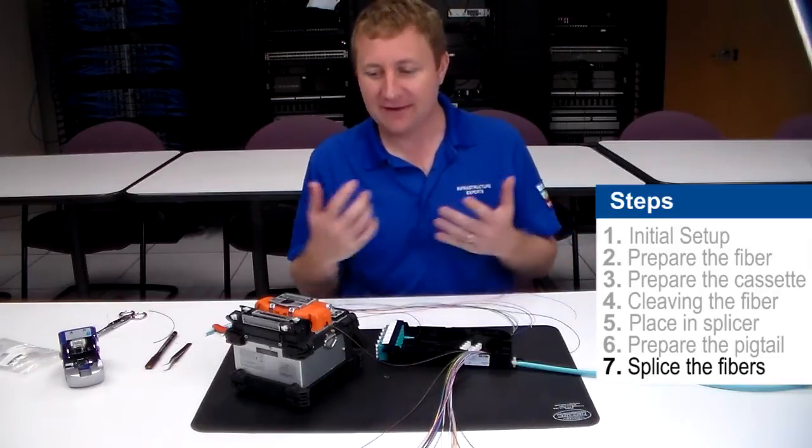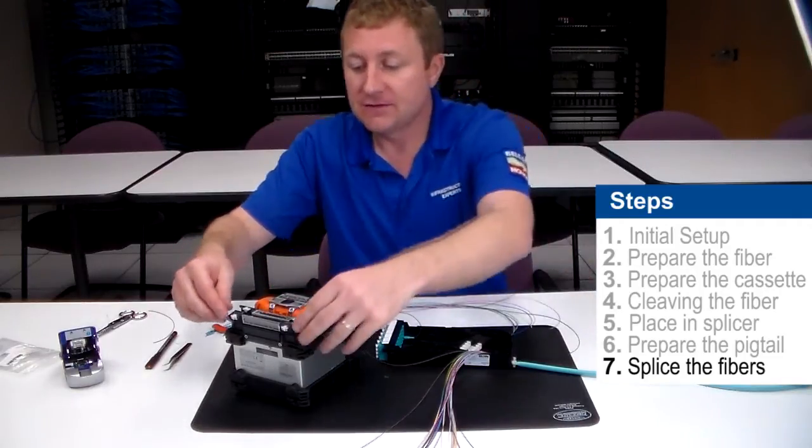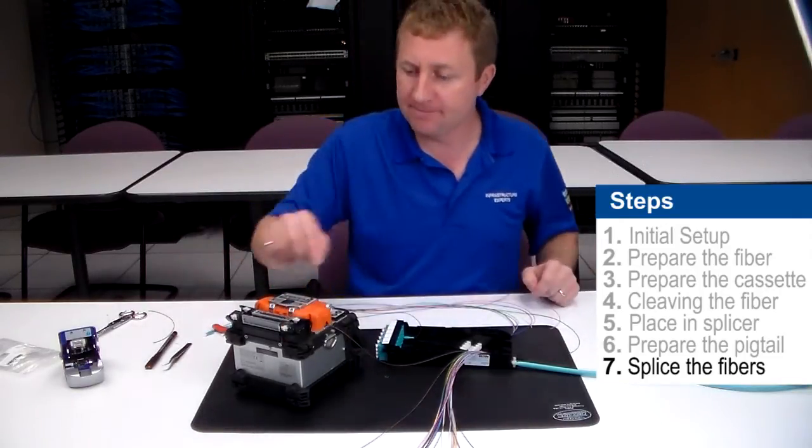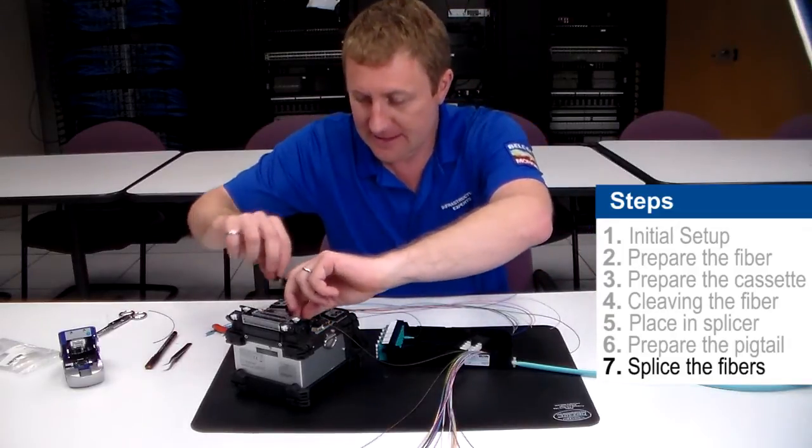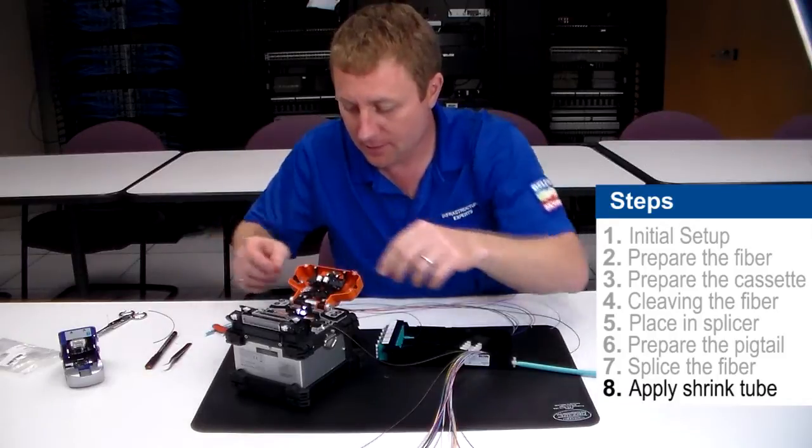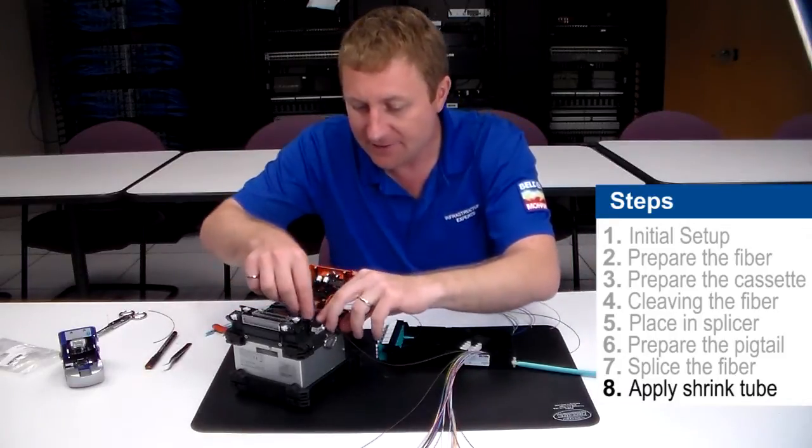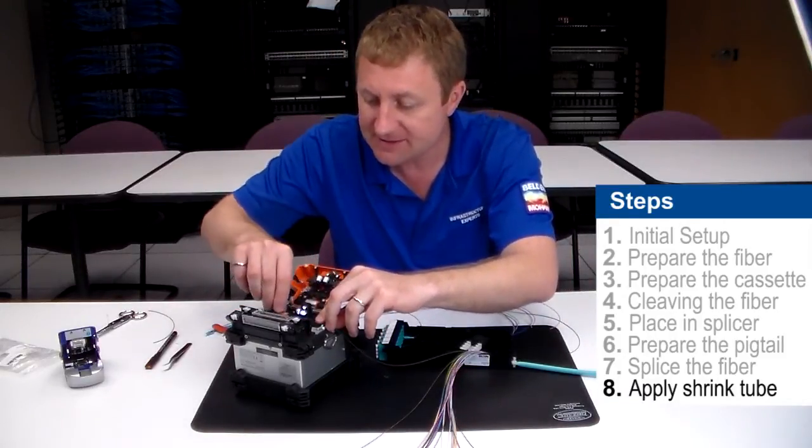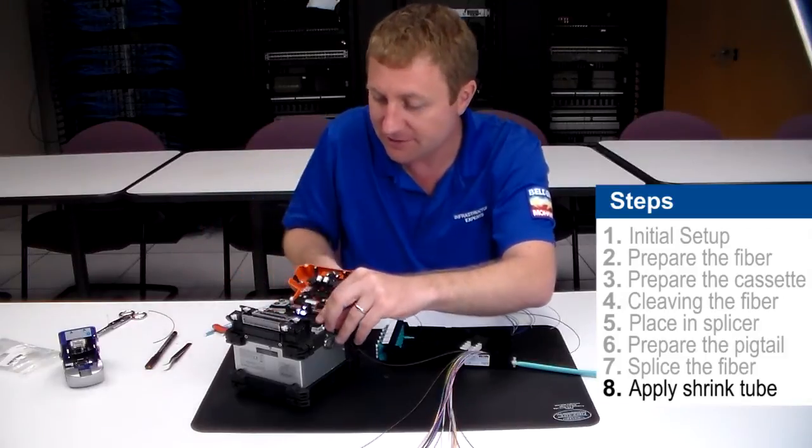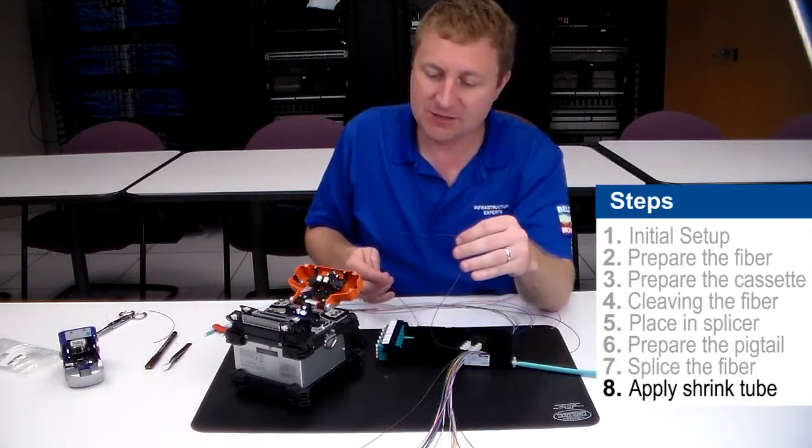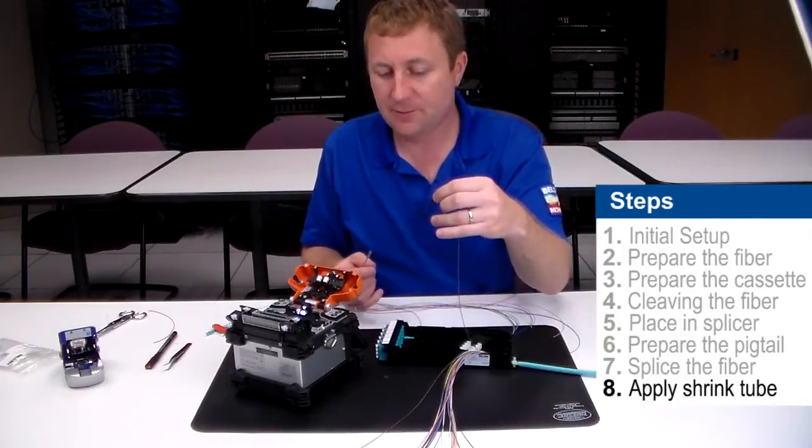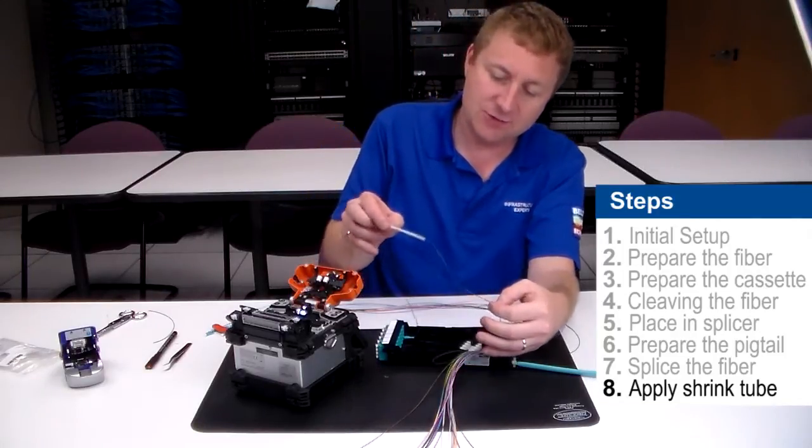So we got a great sound there. We have a very good splice. So first thing I'm going to do, I'm going to open my oven to be able to put my shrink tube on. I'm going to open my splicer, remove the covers. I'm going to have to be very careful with my splice at this point because it's going to be very fragile until we get that shrink tube on.